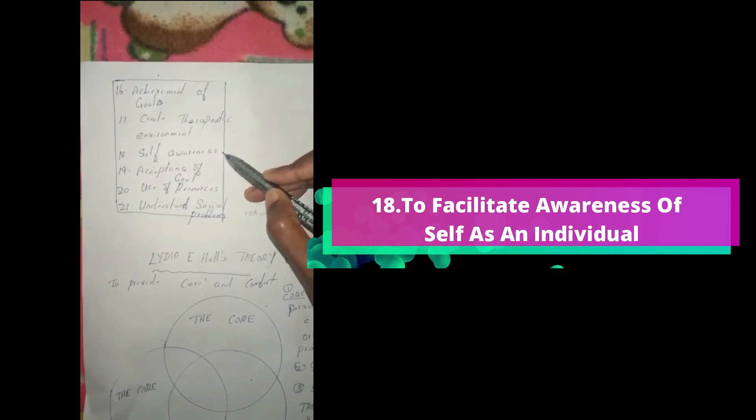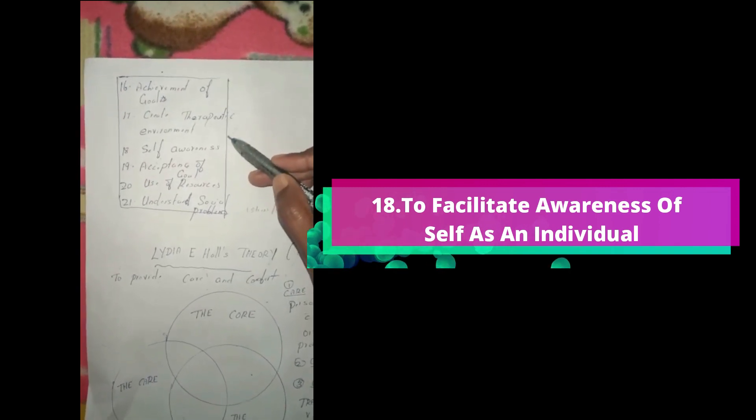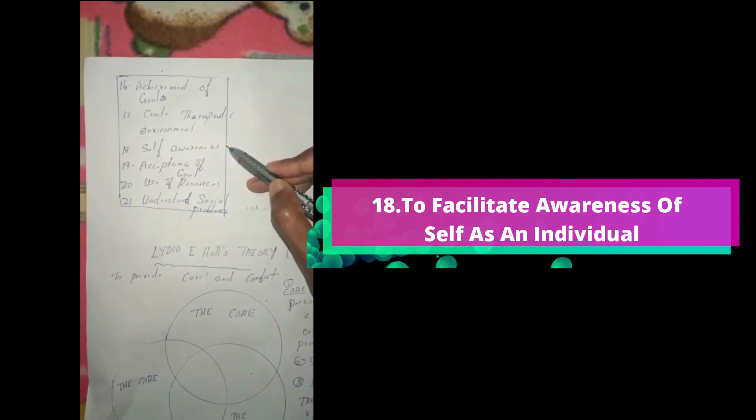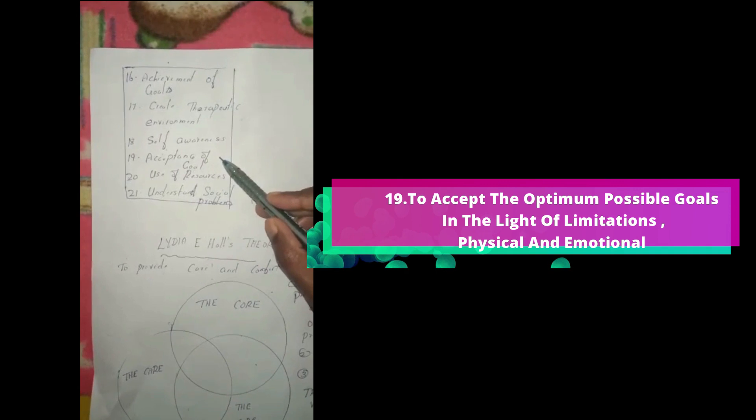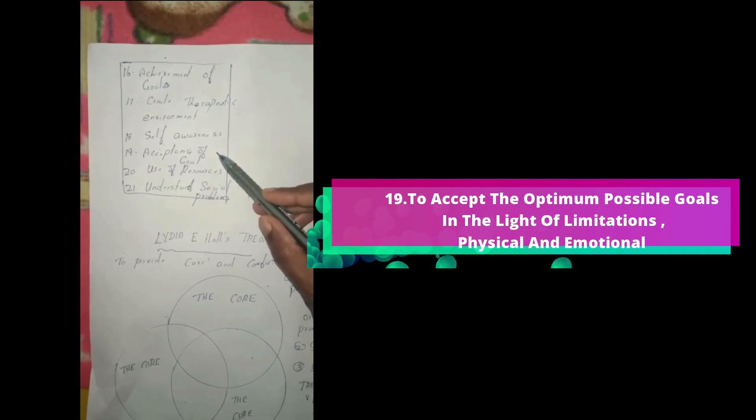Next, self-awareness. Self-awareness means the person should be aware of his own strength and limitations. Acceptance of goal - what goal he or she is having, he has to accept.